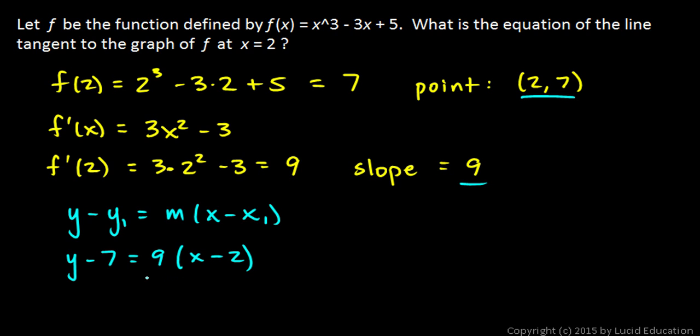We can put this into slope-intercept form. Let's distribute the 9, and we get y - 7 = 9x - 18. And then add 7 to each side, and that gives us y = 9x - 11.